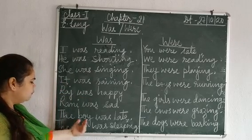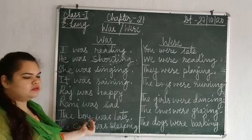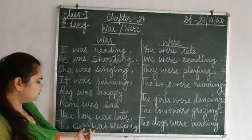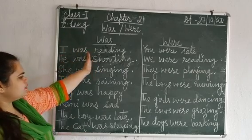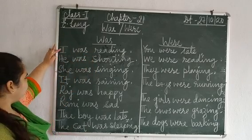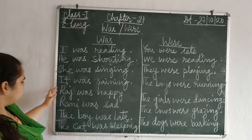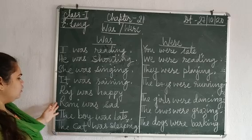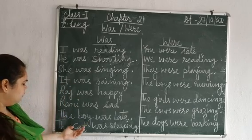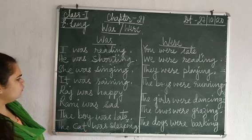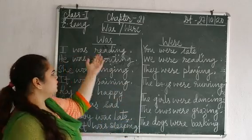The boy is singular, and the cat is a singular noun. So to recap, was is used with I, he, she, it, Raj, Rani, or any noun of your choice — the boy, the cat. These are some ways we can use the word was.